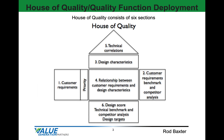House of Quality consists of six sections. The first being customer requirements and priority ranking. Then you'll have current design benchmark and competitor analysis against customer requirements. Then we'll define design characteristics intended to deliver customer requirements, determine a strength of relationship between customer requirements and design characteristics, do a paired correlation between each design characteristic, determine design characteristics scores, and conduct a current design benchmark and competitor analysis against design characteristics.